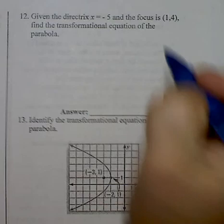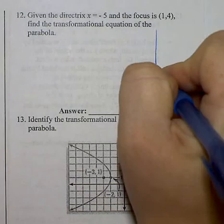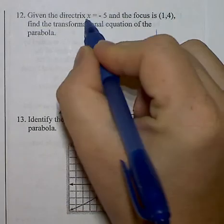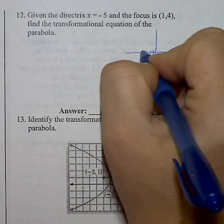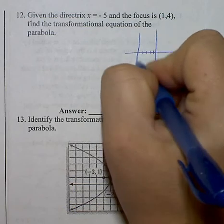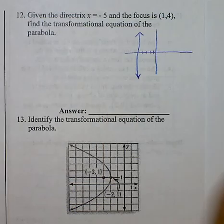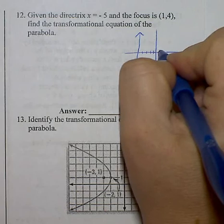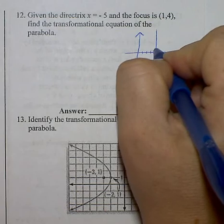So I'm a visual learner, I'm going to just graph this. So I'm going to go to x equals negative 5, 1, 2, 3, 4, 5, and draw the directrix. Then I'm going to go to a focus of 1, 4, at 1 and 4, 1, 2, 3, 4.